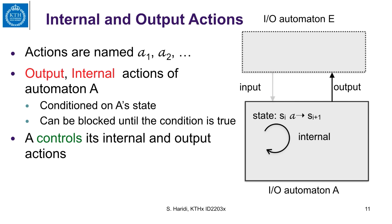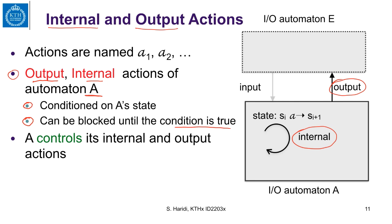Output and internal actions are different. An output action is performed by automaton A toward the environment, and an internal action is also performed by automaton A. Output and internal actions of automaton A are conditioned on the state of A — they are not always enabled. They are blocked until the condition on the state is satisfied. By this we say that automaton A controls its internal and output actions.